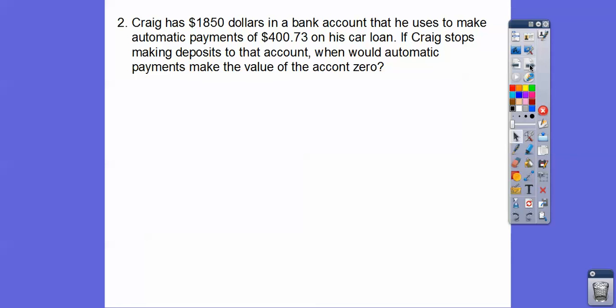Okay, one more. Craig has $1,850 in his bank account. We did this problem also that he uses to make automatic payments on his car loan of $473. If Craig stops putting money in his account, that's what deposits are, when will the payments make the value 0? So the same thing. We just make the 1850 minus the 473x equal to 0 and x is the number of months.